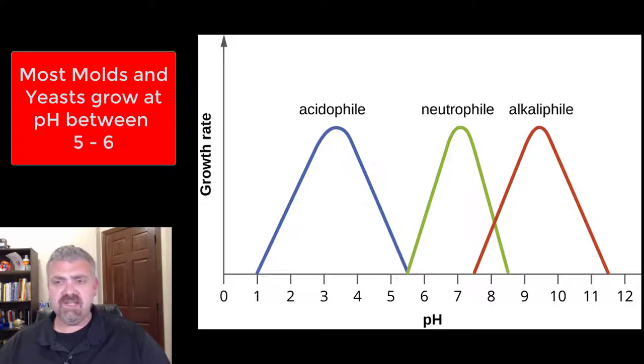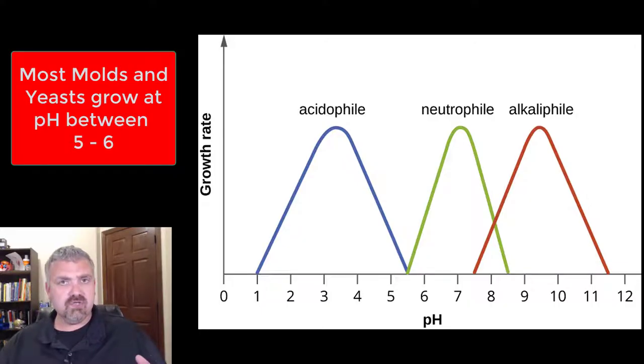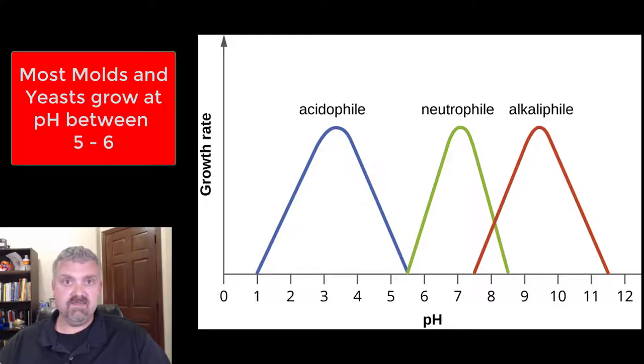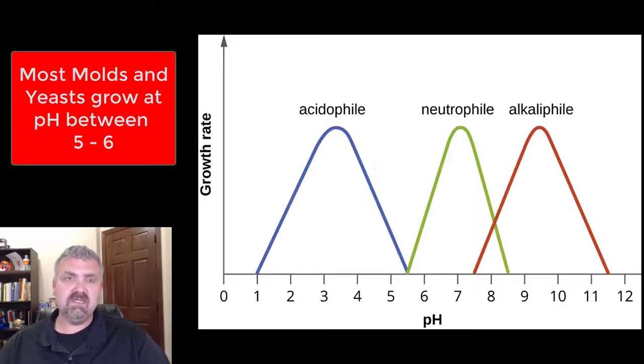Molds and yeast generally can grow along a larger pH range, but they generally like a pH closer to 5 to 6. So bacteria like 6.5 to 7.5, and molds and yeast prefer a little more acidic.